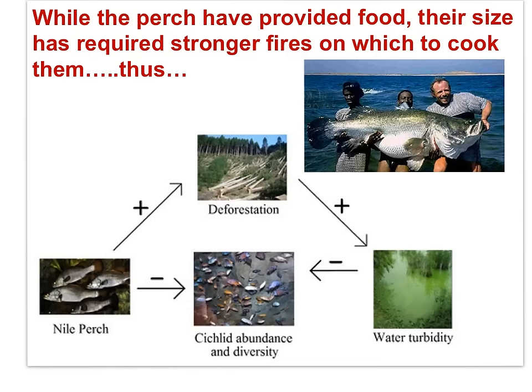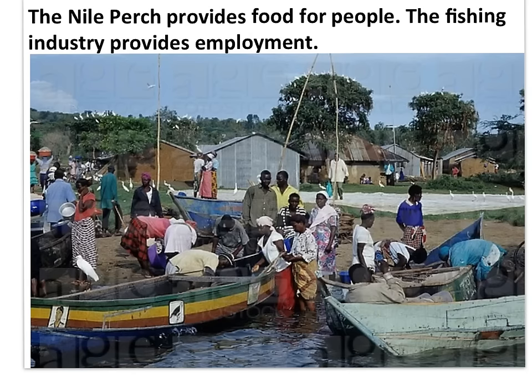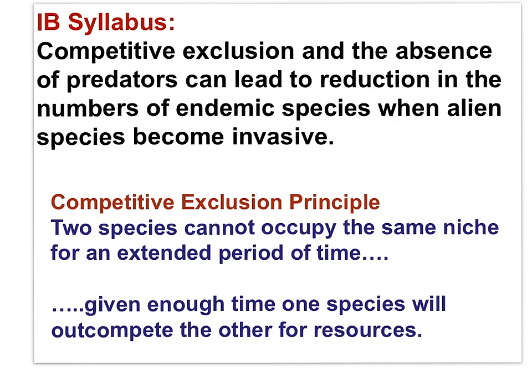While the perch have provided food, their size has required stronger fires on which to cook the animal, thus causing deforestation. Deforestation has resulted in changes to the quality of the water, making it more turbid and less clear. Both the Nile perch and the turbidity of the water due to deforestation have had negative impacts on other fish species, the cichlids. The introduction of the Nile perch created a small fishing industry providing food and employment. Commercial fishing is currently the only control method. Over the past 20 years, the quantity of Nile perch caught has slowly been declining, and several species that had declined are showing some increasing numbers.